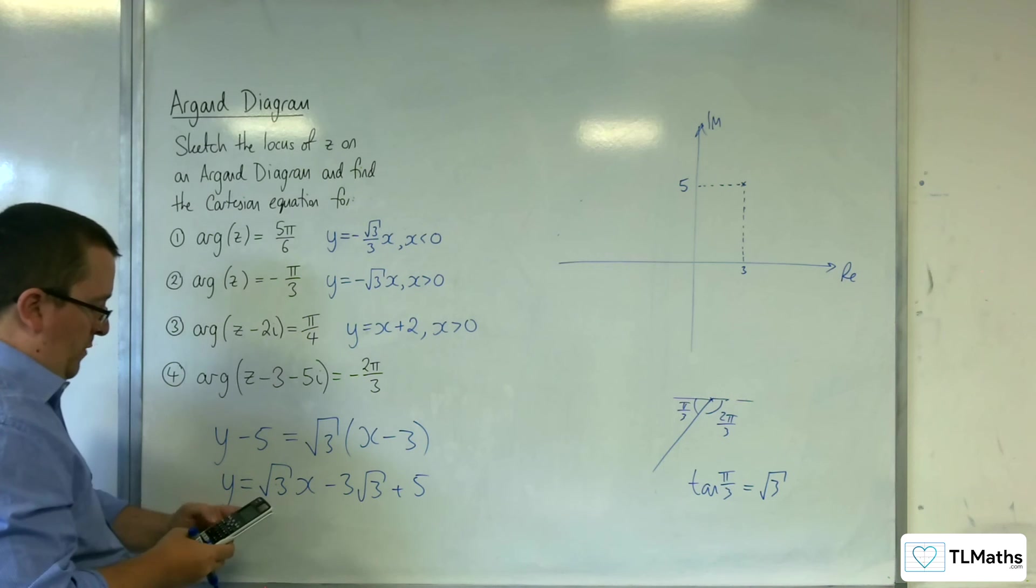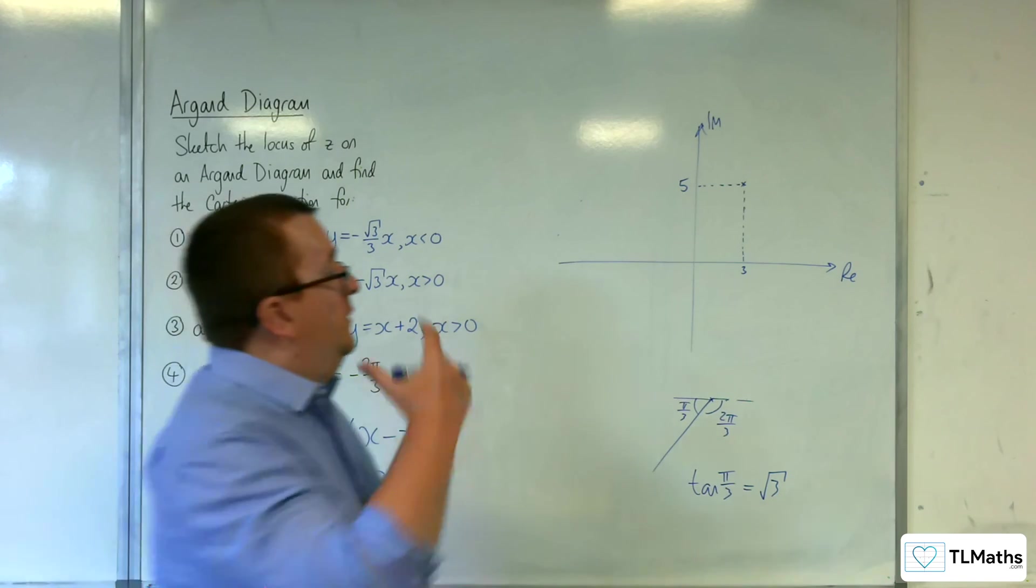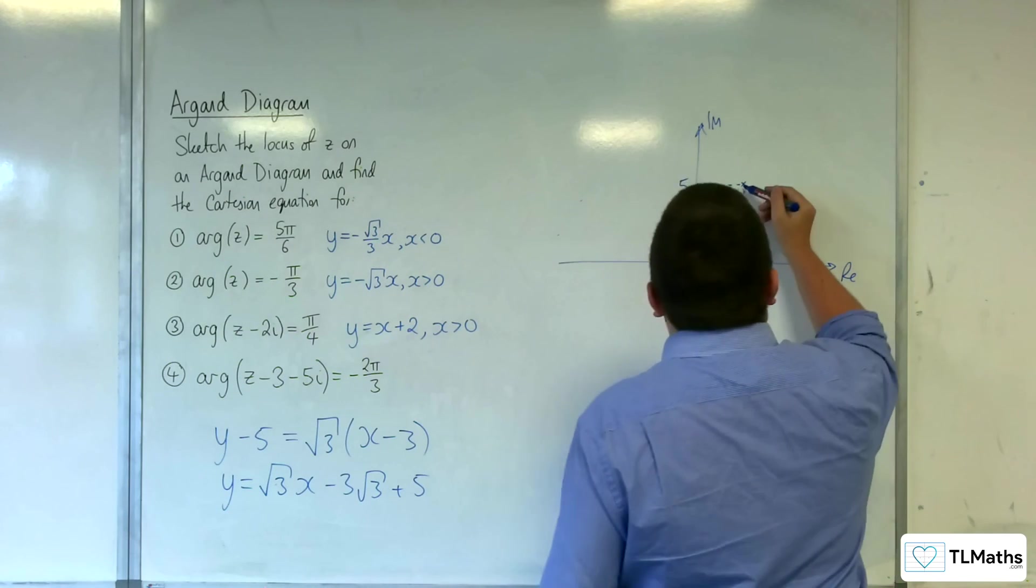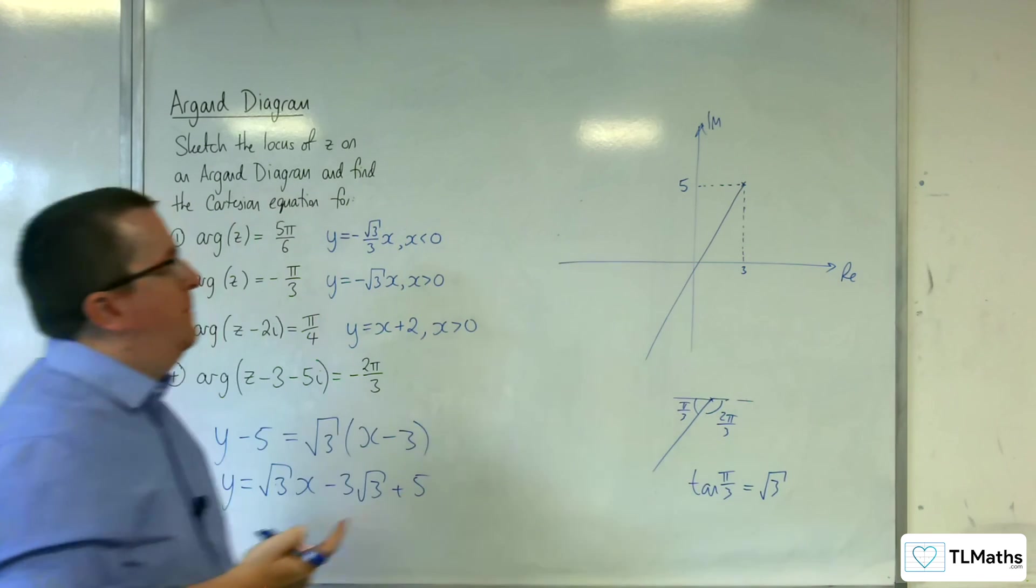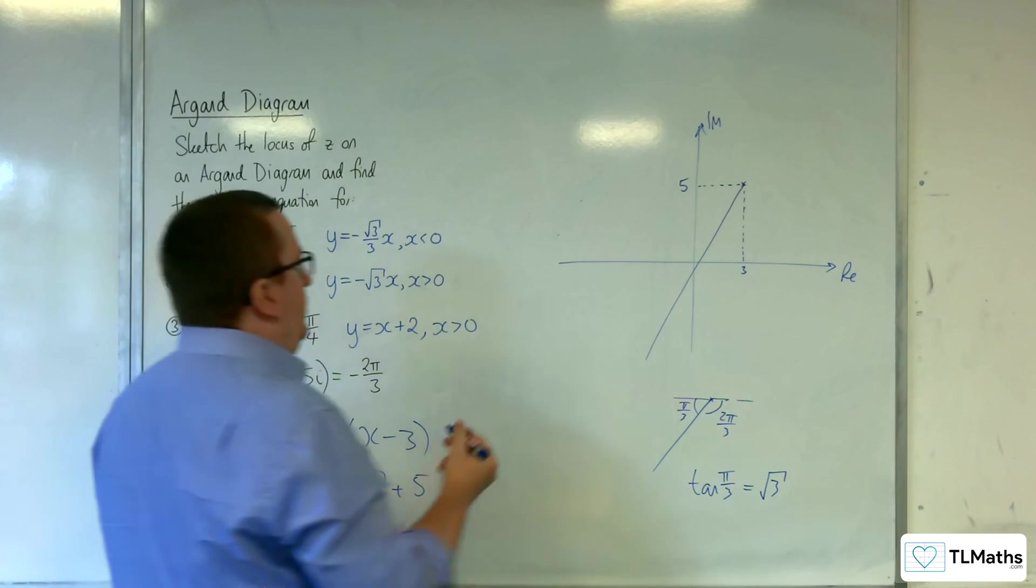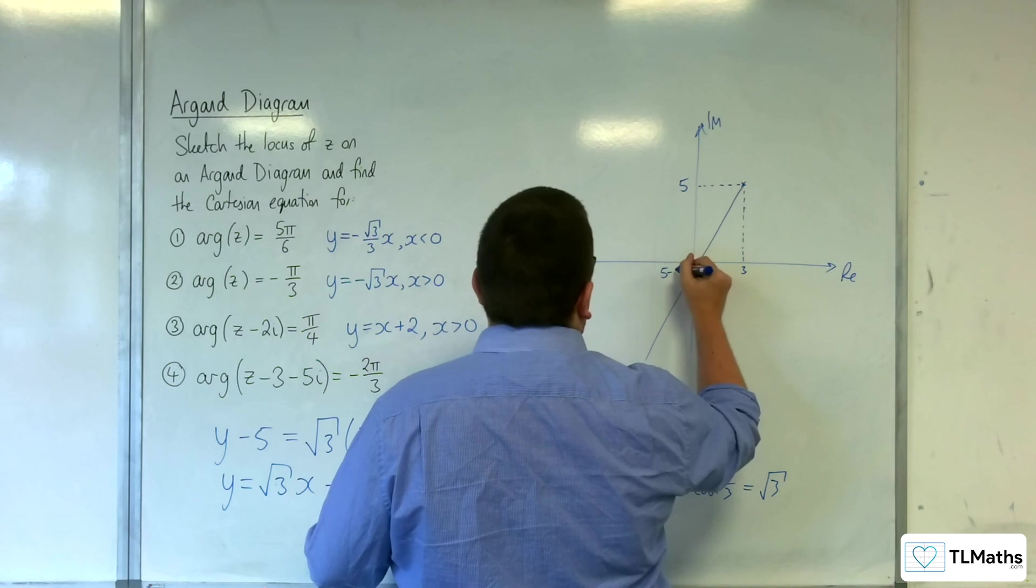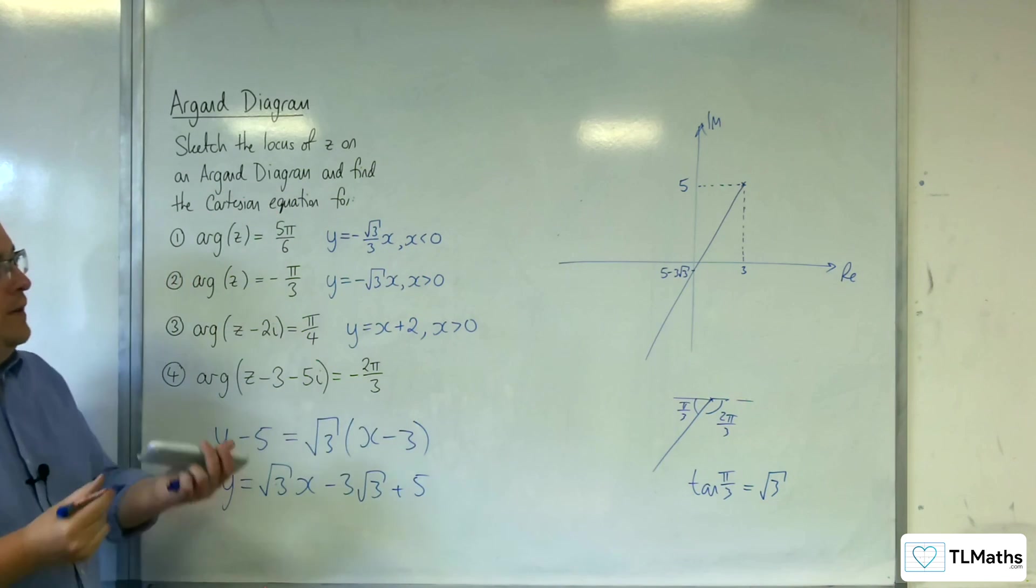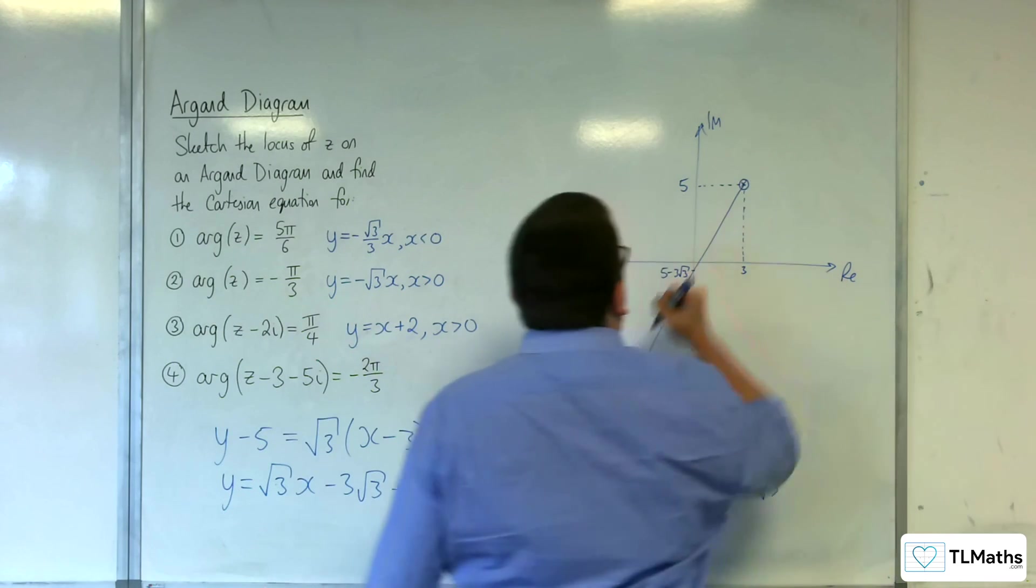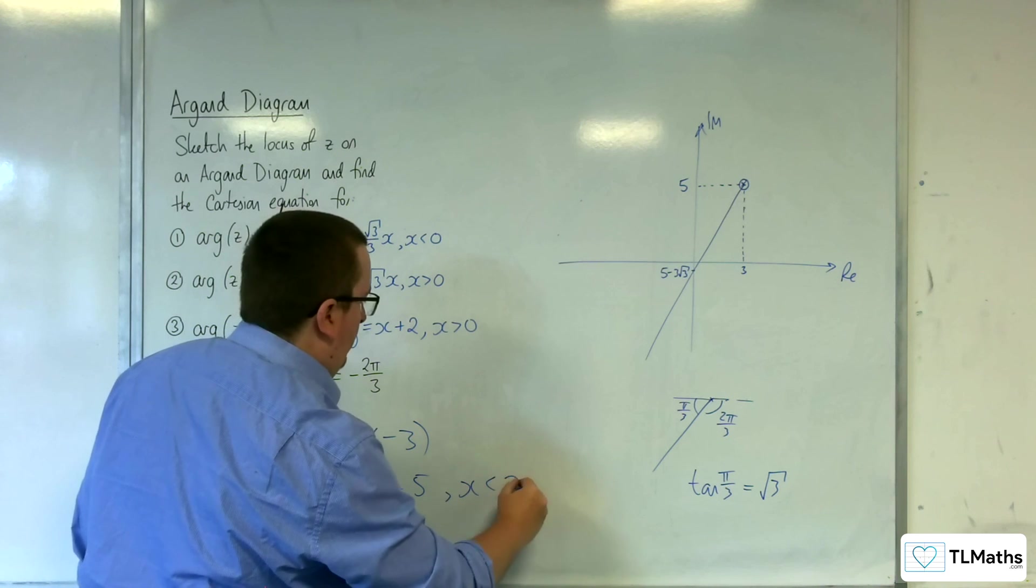Now, minus 3√3, plus 5 is minus 0.196. So, that means that my line does something like this. It goes through the negative imaginary axis. So, that point there is 5, take away 3√3. And I'm not including that point.